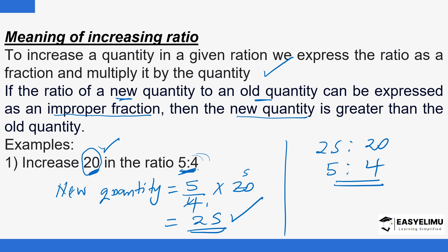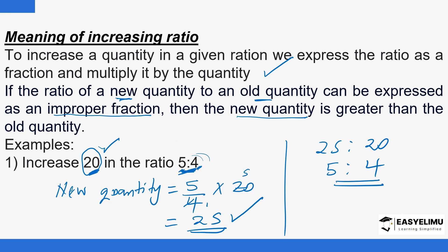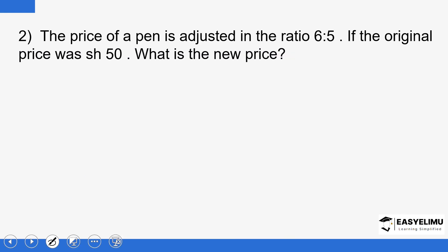If you are looking for the new quantity, you take the ratio — say 5 divided by 4 — and multiply by the original value to give the new value. If you had the new value and needed the original, you would take 4 divided by 5 and multiply by the new value. Take note of that. Now let's look at an example: the price of a pen is adjusted in a given ratio.